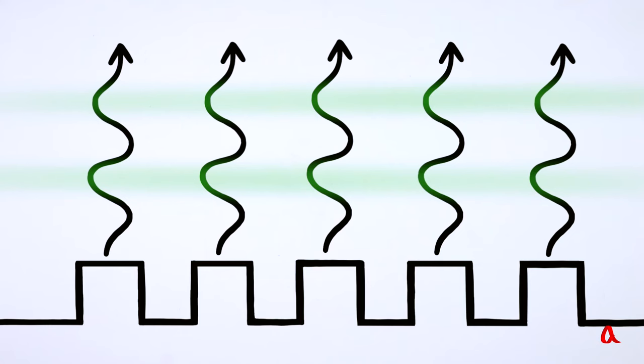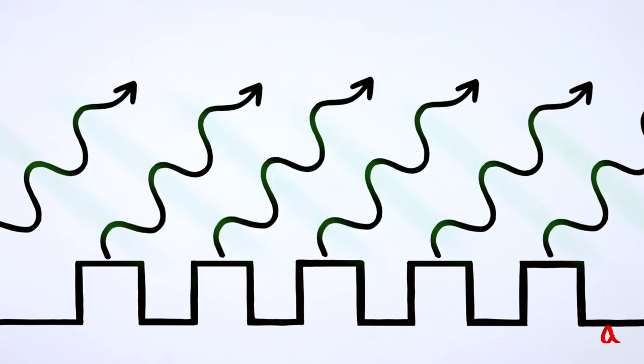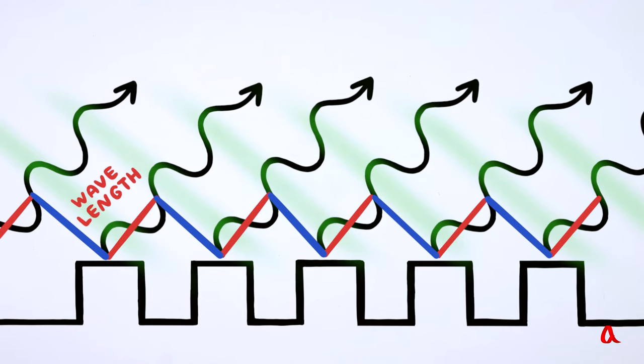However, the crests can also coincide when the waves scatter at an angle to the disc. Here, the path difference between them is one wavelength, and in this direction bright spots will be visible too.